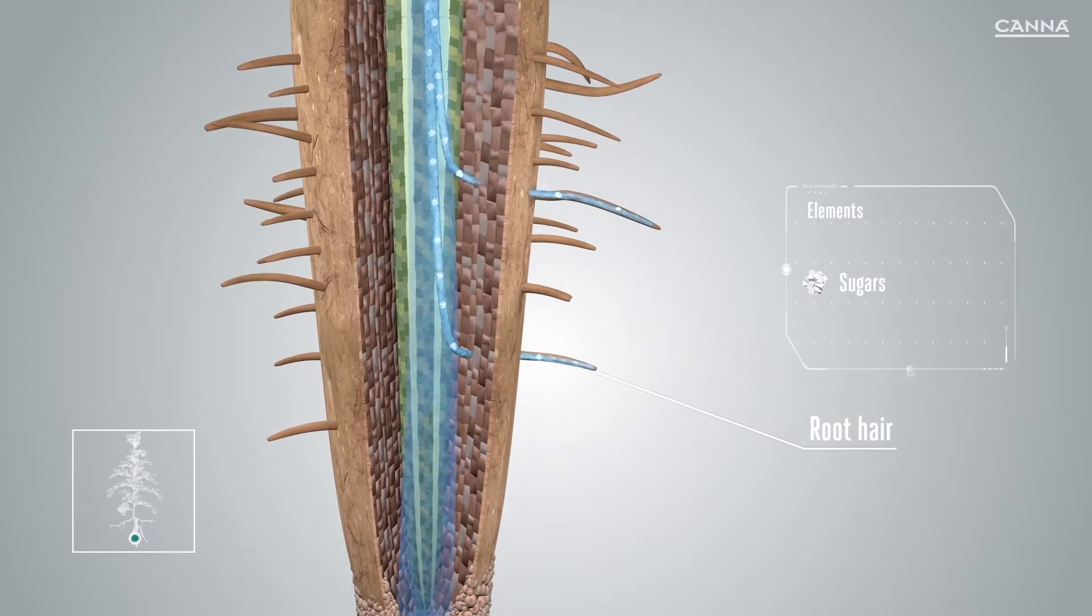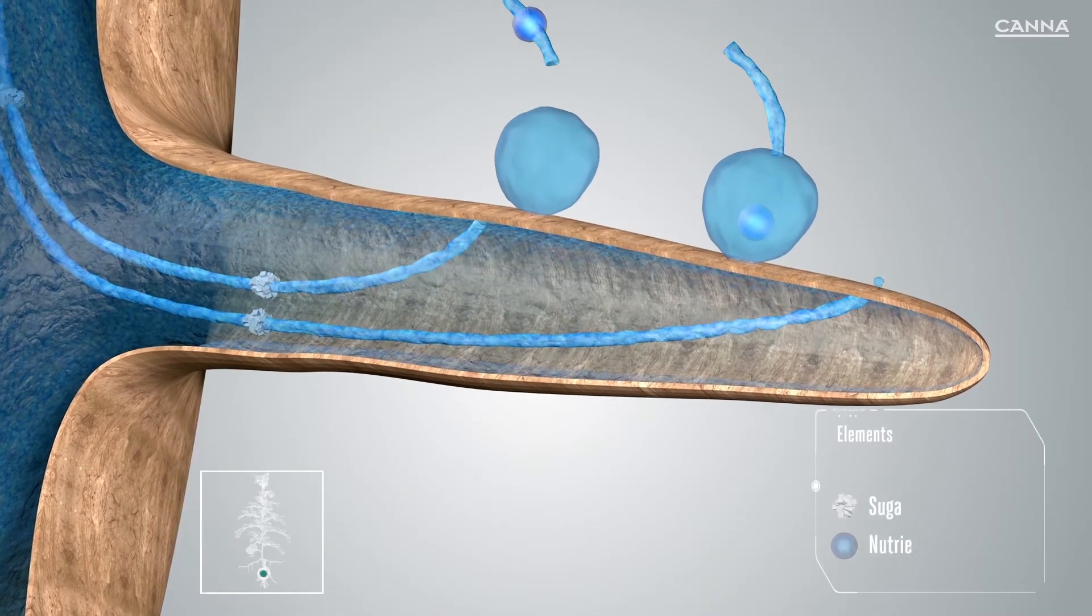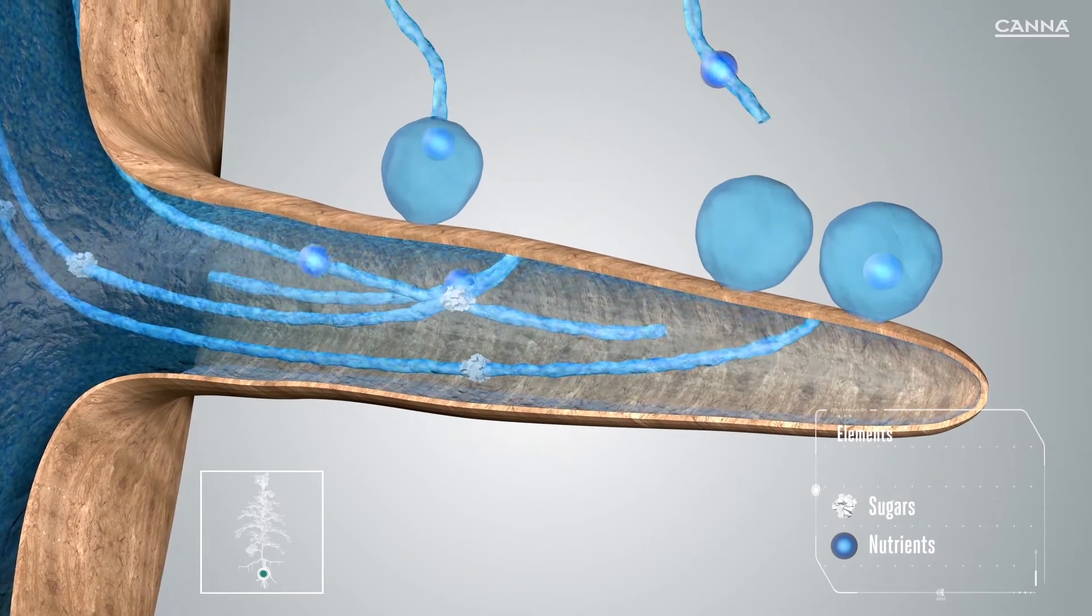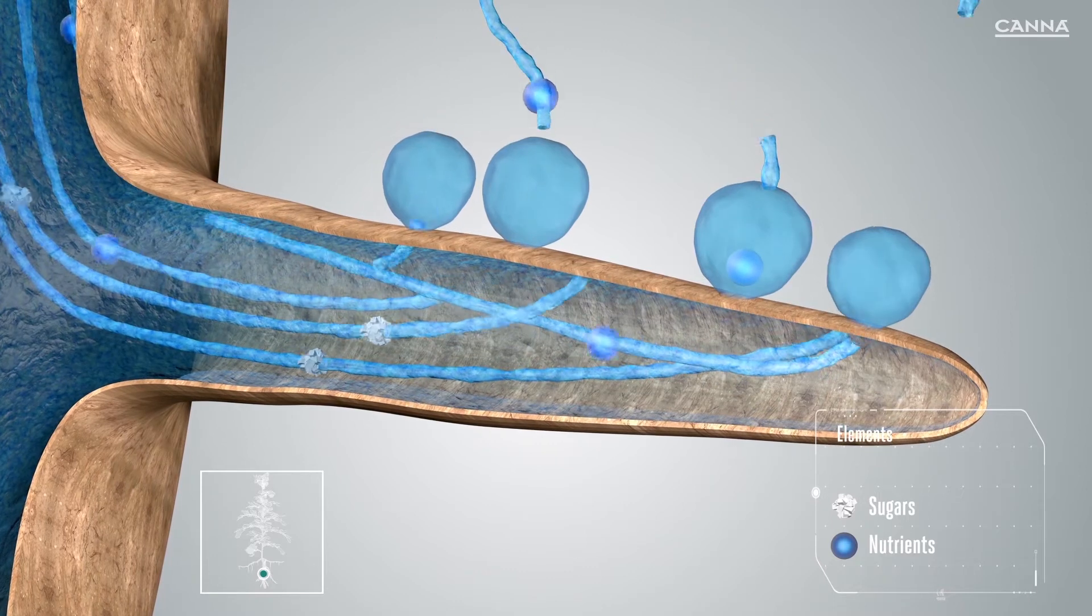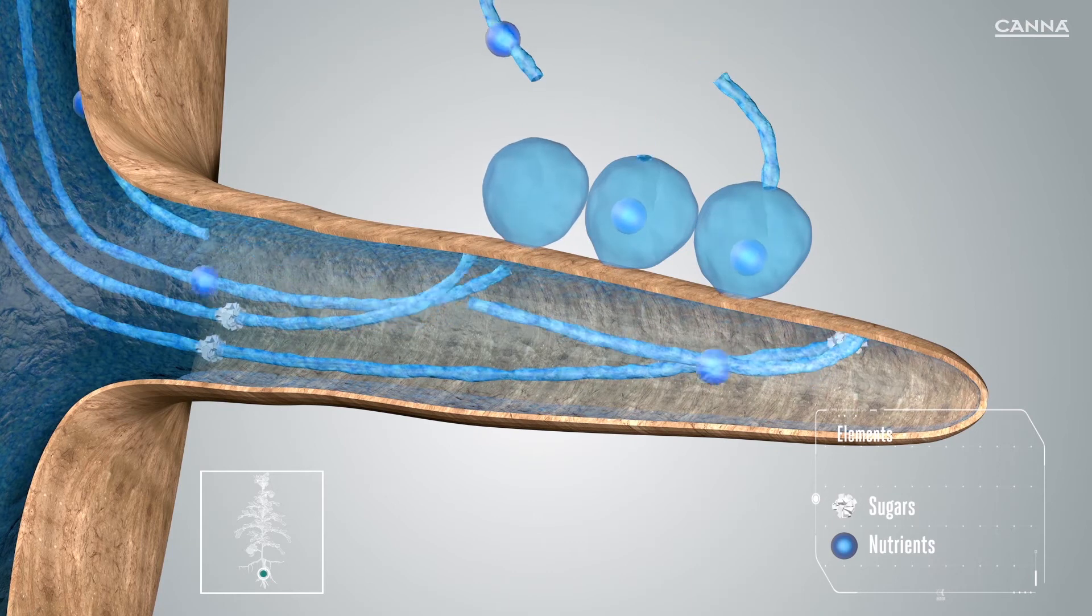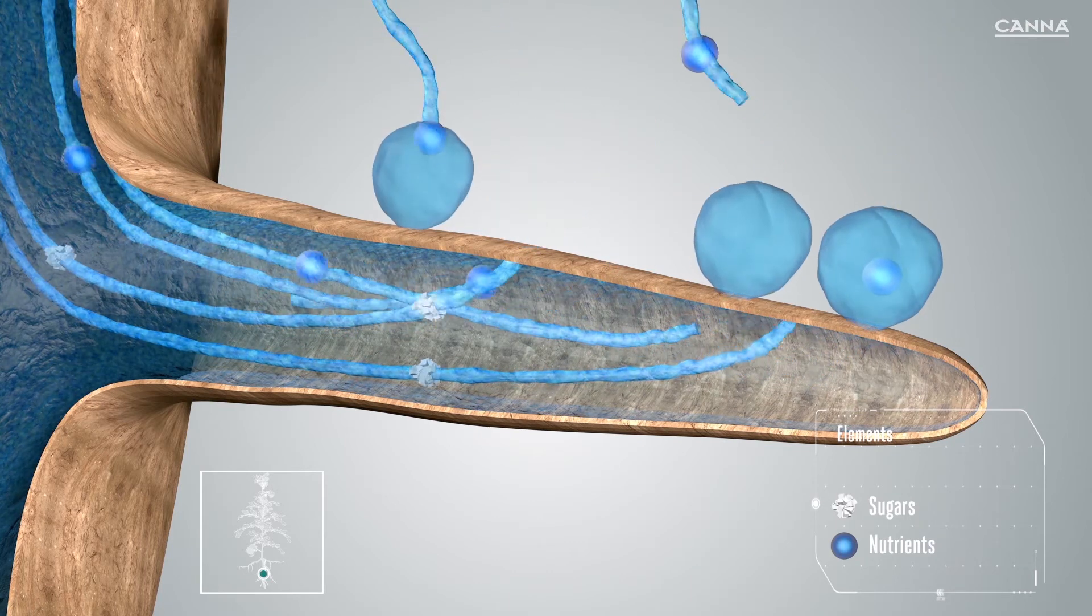The root system consists of roots and root hairs. Around these root hairs there are many tiny organisms. Some of these microorganisms, such as tiny fungi known as mycorrhizal fungi, absorb energy and metabolites from the root but also take in nutrients and moisture from the substrate and pass these onto the plants.